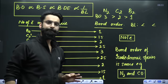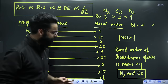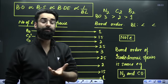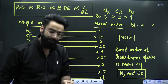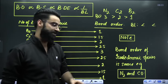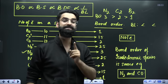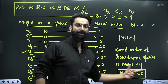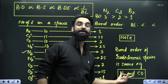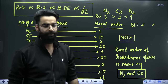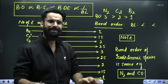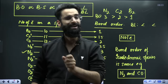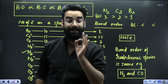Do remember one more important thing: whenever you see isoelectronic species — isoelectronic species are the ones which have the same number of electrons — they always have the same Bond Order. For example, N2 and CO are both 14-electron species, so both will have a Bond Order of 3. This is one quick hack through which you can solve Bond Order, Bond Strength, Bond Dissociation Energy, and Bond Length questions in less than 10 seconds.